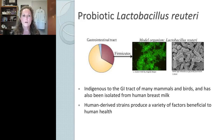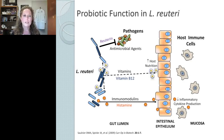Lactobacillus reuteri is a known probiotic, extensively characterized in the literature and never shown to be associated with disease. It is indigenous to the GI tract of many mammals and birds, and has also been isolated from human breast milk. Human-derived strains produce a variety of factors beneficial to human health, including the production of the antimicrobial reuterin, which has been shown to inhibit specific GI pathogens. L. reuteri can also produce vitamins — our human-derived strains produce vitamin B12 — and specific strains can produce histamine in the GI tract, which works as an inflammation modulator, suppressing inflammation in the host.